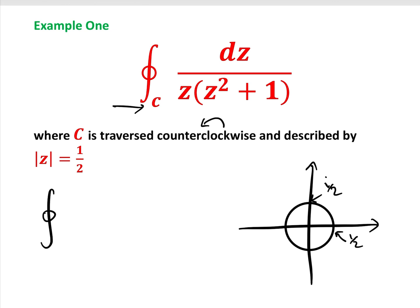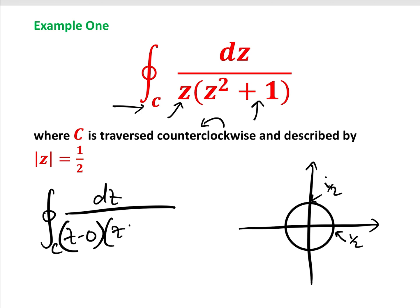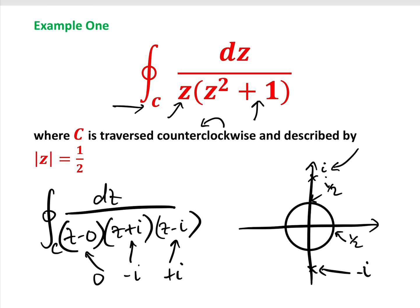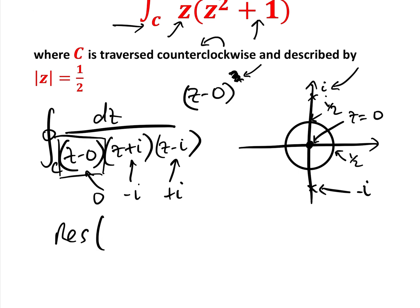We rewrite our integral as dz over (z − 0), just to show there is a pole at 0, and we factorize z² + 1 as (z + i)(z − i). So we have three poles: at 0, at −i, and at +i. Both +i and −i are outside the region, so the only pole that concerns us is z = 0, which is within the region. The order of that singularity is 1, so we can use the simplified residue formula.